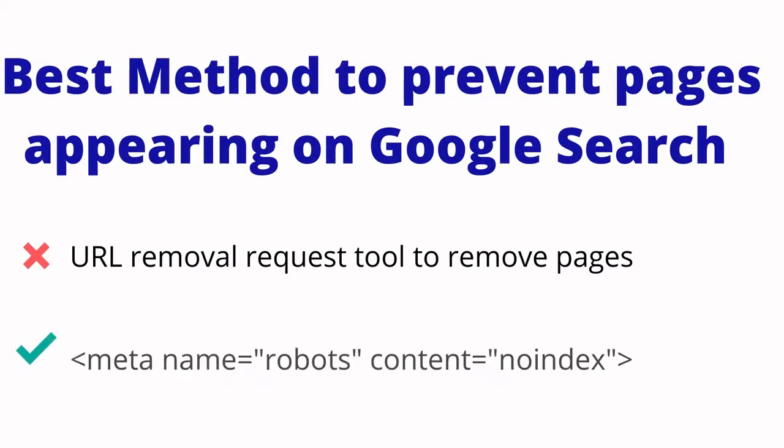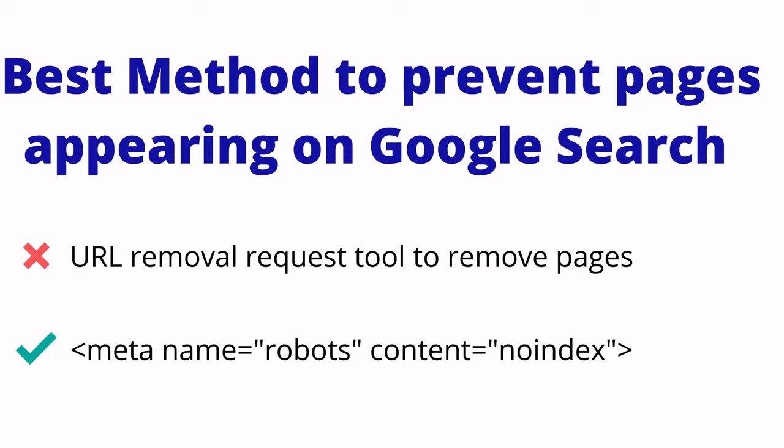To send a strong signal, use the meta robots tag set to noindex. If you are using a plugin, you can set meta robots as noindex. This is the way you can send a strong signal to Google not to index a page. If you want to remove or prevent pages from appearing on Google search results, the permanent solution is using meta name robots noindex.